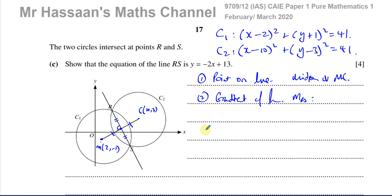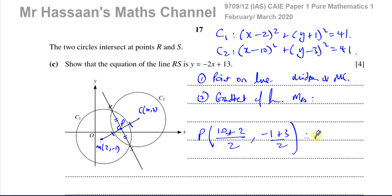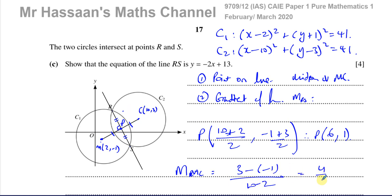We find the midpoint P of M and C: x coordinate is 10 plus 2 over 2 equals 6, and y coordinate is minus 1 plus 3 divided by 2 equals 1. So point P has coordinates 6, 1. The gradient of line MC is the change in y over change in x: 3 minus minus 1 over 10 minus 2, which is 4 over 8, giving a gradient of one half.